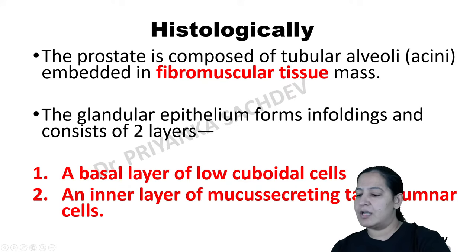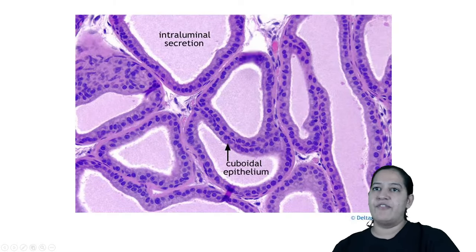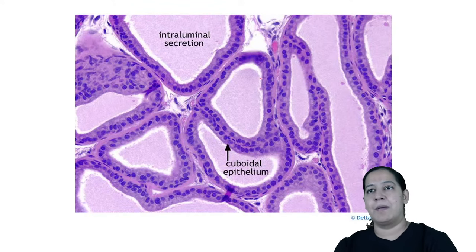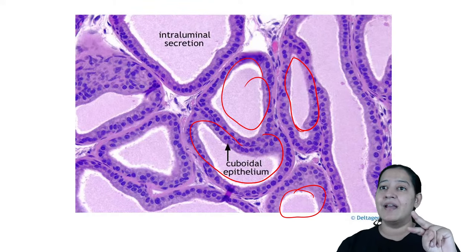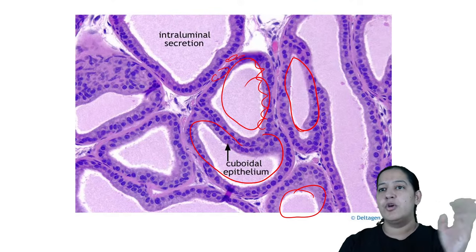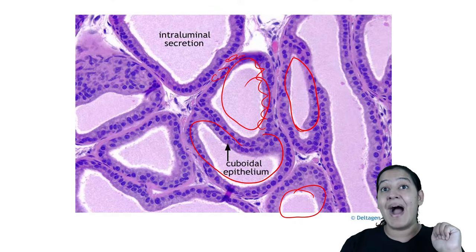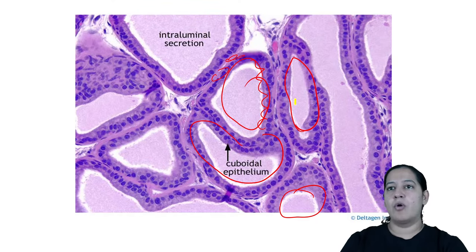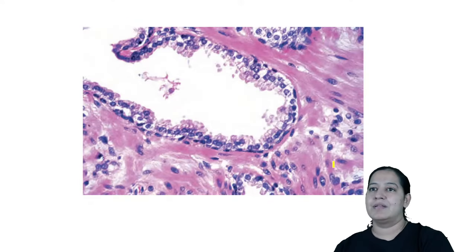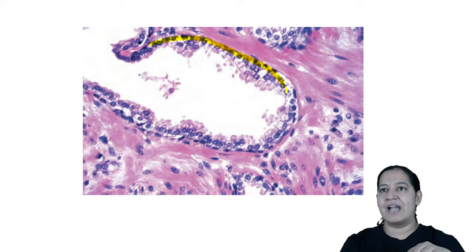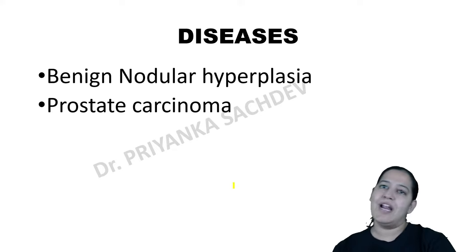Normal histology of the prostate: if you cut the prostate and take a slide, you see multiple glands. All glands are lined by two layers — inner columnar and outer cuboidal — they are bilayered. The background is known as stroma, which contains fibromuscular elements: fibromuscular stroma. So normal prostate has bilayered glands in a fibromuscular stromal background. Please remember this before I start BPH and carcinoma.